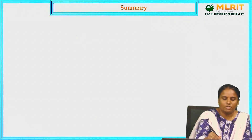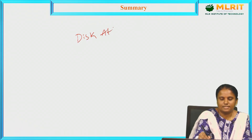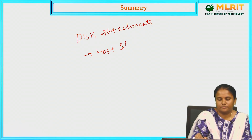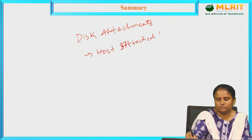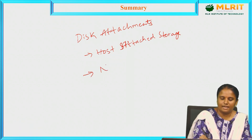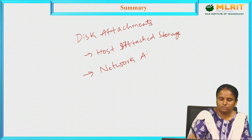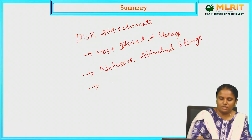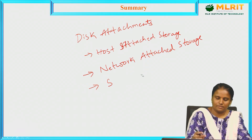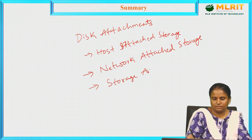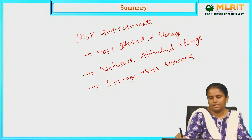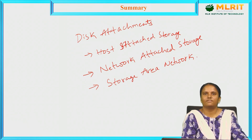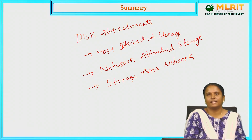In this session we have seen about disk attachments. Disk attachments are of three types: host attached storage, network attached storage, and storage area network. These are the three disk attachment types used in operating systems. If you have any doubts you can comment in the comment box. Thank you.